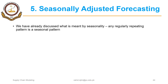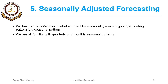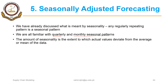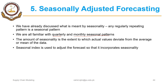We have already discussed what is meant by seasonality — any regularly repeating pattern is a seasonal pattern. We are all familiar with quarterly patterns. That season could be a day of the week, a month of the year, a quarter of the year, or it could be a literal season as well. The amount of seasonality is the extent to which actual values deviate from the average or mean of the data, so seasonal index is something that we will be calculating.